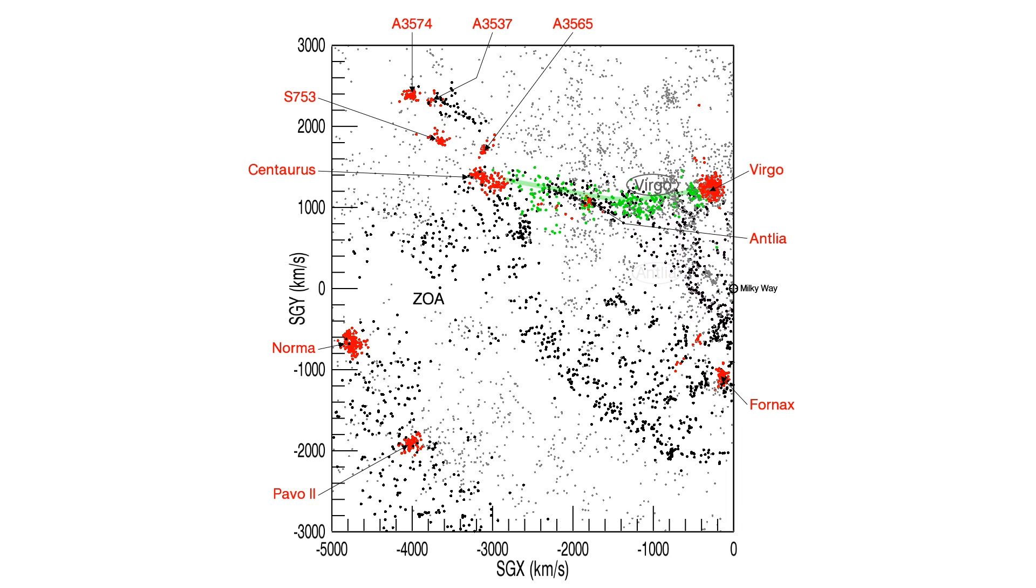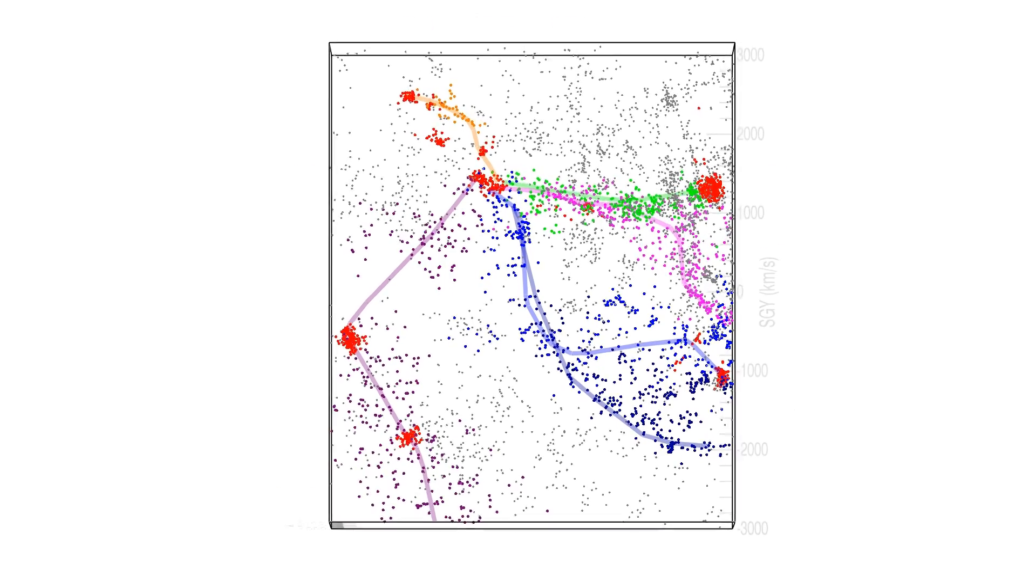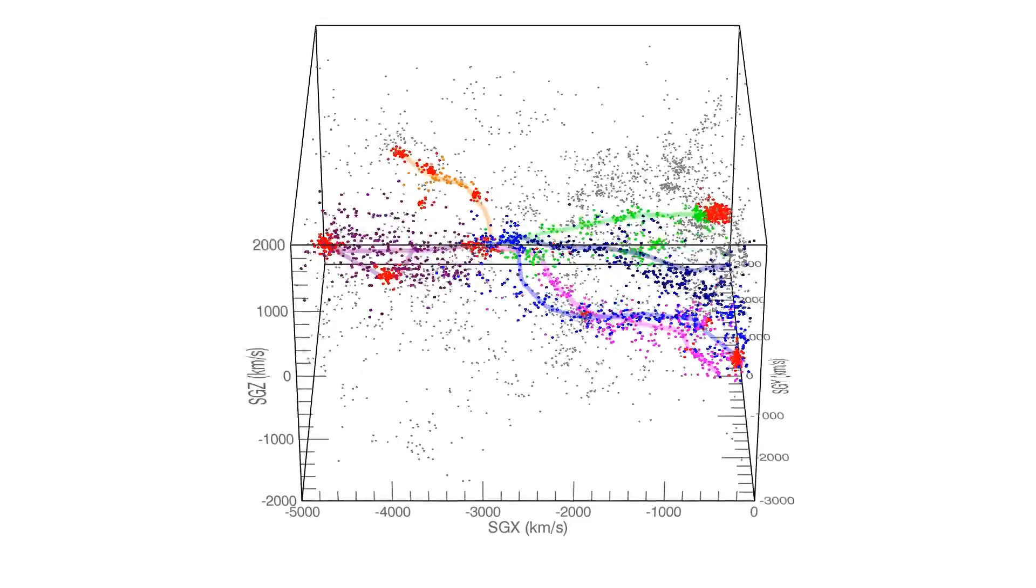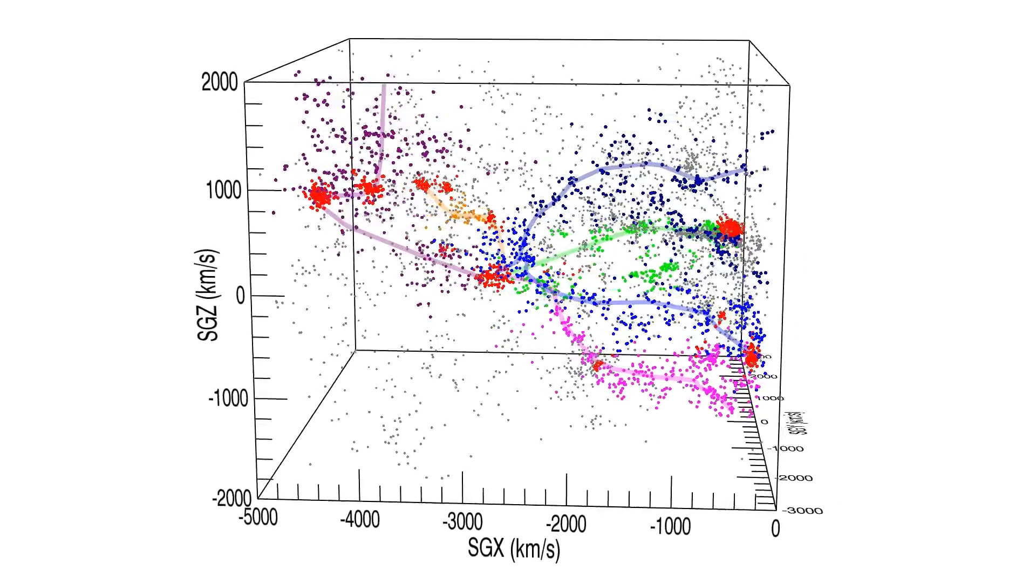Green, pink, purple, orange and blue. The blue strand bifurcates into two branches as it crosses the zone of avoidance. The convergence of the five filaments onto the Centaurus Cluster is seen best with movement of the viewing angle.